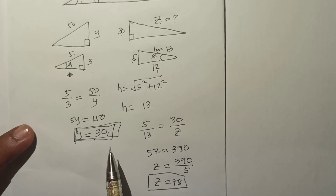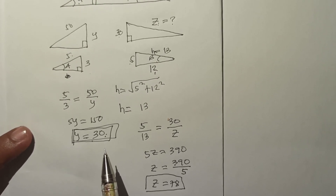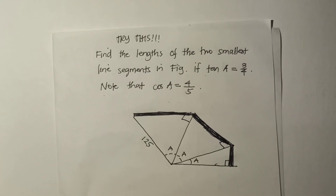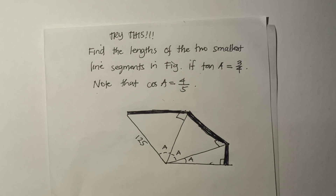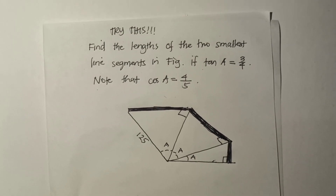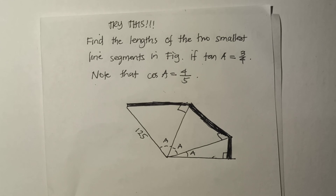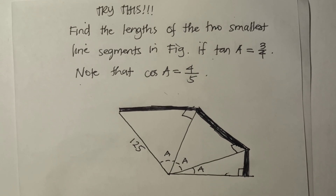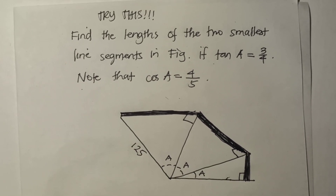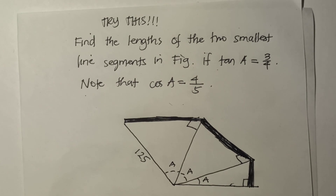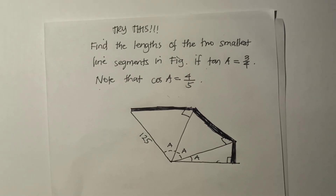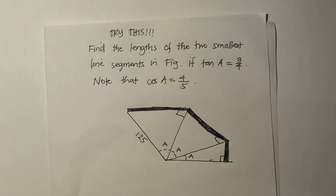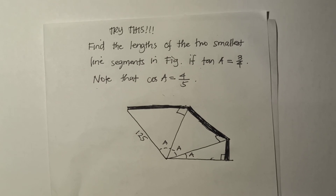I hope you learned something today. I'll be leaving you another activity to solve: find the lengths of the two smallest line segments in the figure if tangent A equals 3 fourths, and note that cosine A equals 4 over 5 and that the figure is drawn to scale. Please leave your answers in the comment section. Thank you for watching everyone!